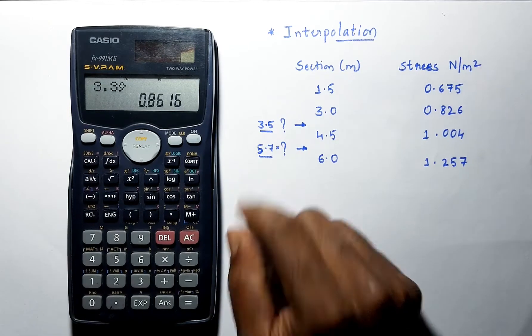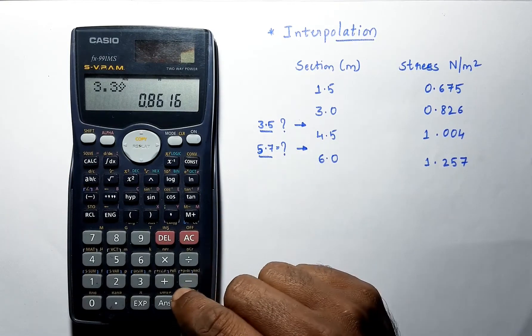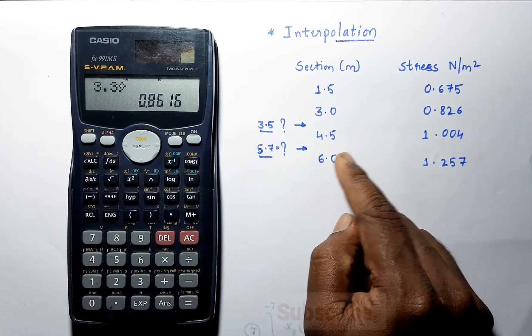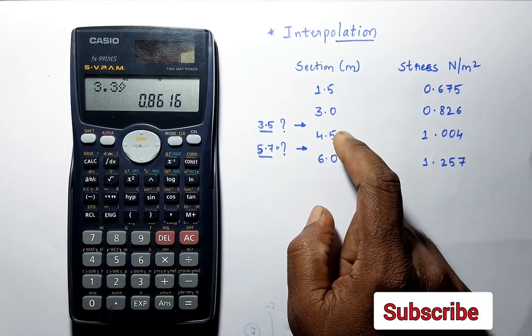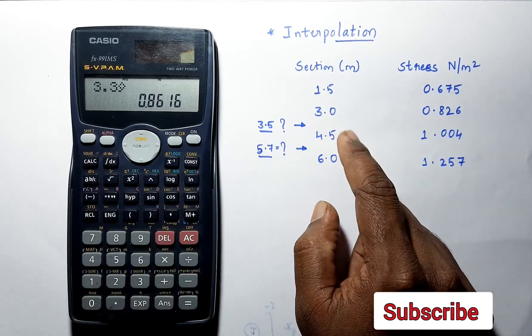Now we have to find out for 5.7, which lies between 4.5 and 6.0. Now this 4.5 is already stored.